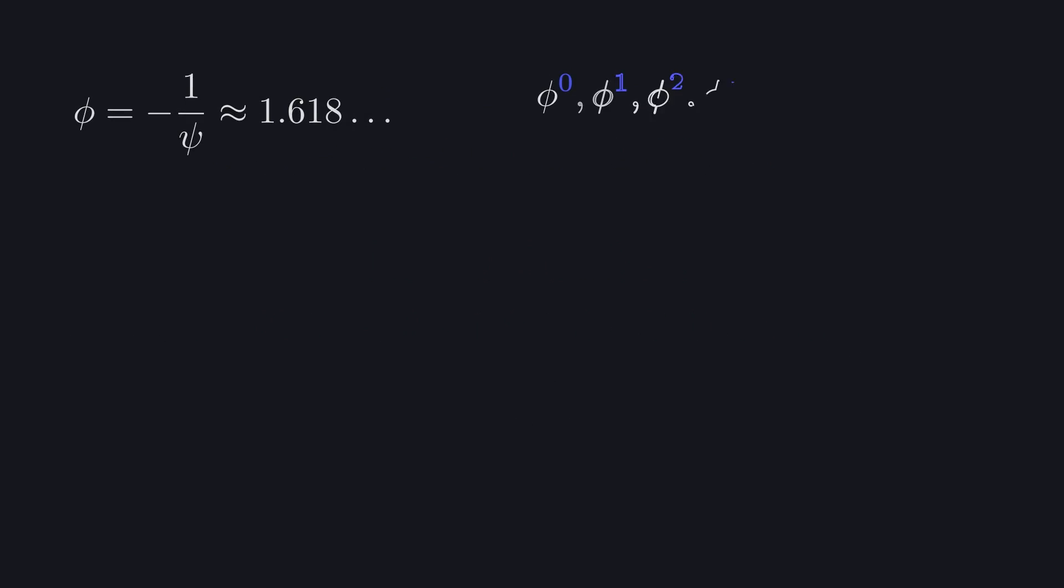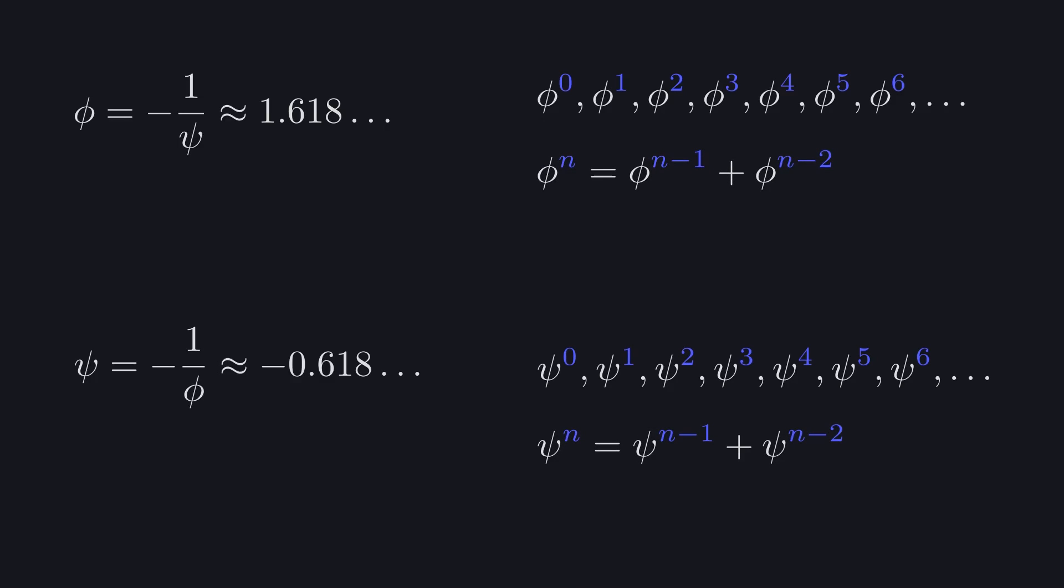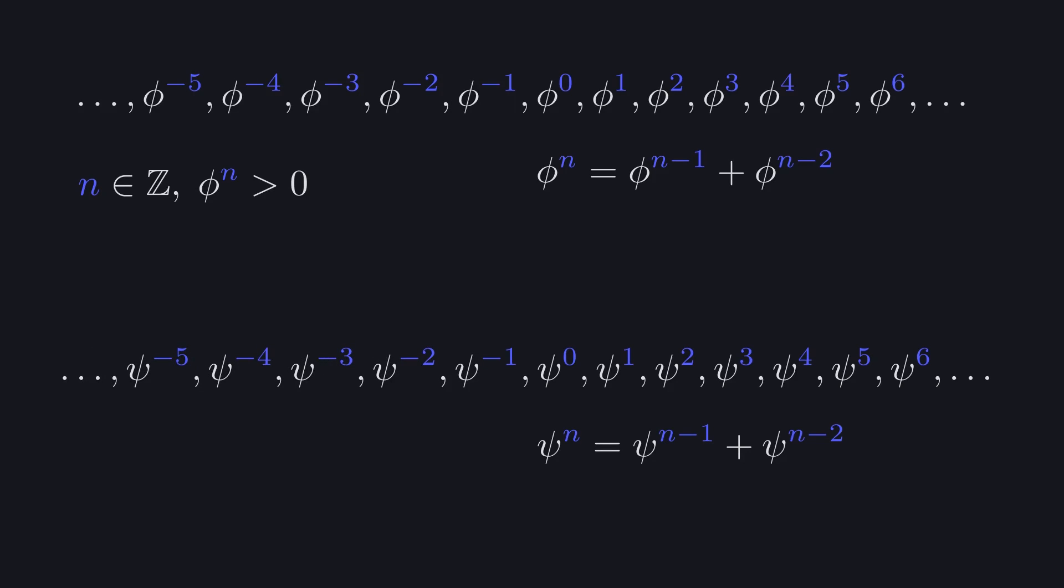Notable examples in this system that behave differently are the sequence of powers of phi, the golden ratio, and of psi, its negative reciprocal. These belong to the same family of sequences as Fibonacci and Lucas numbers, because they have the property of previous two powers adding up to the next one, which stems from the definition of the golden ratio. An integer power of phi will always be greater than 0, and powers of psi, since it's a negative number, will alternate signs for both positive and negative inputs of n.